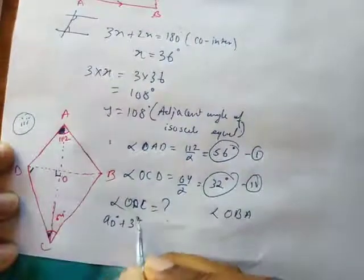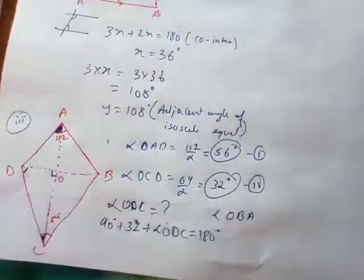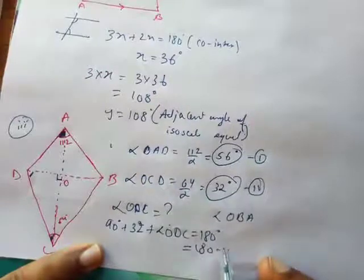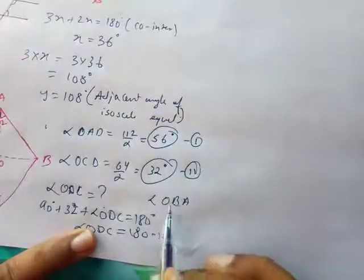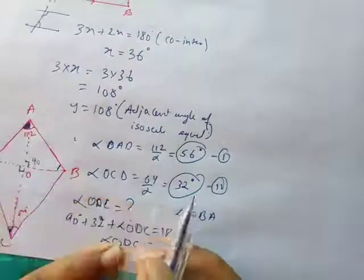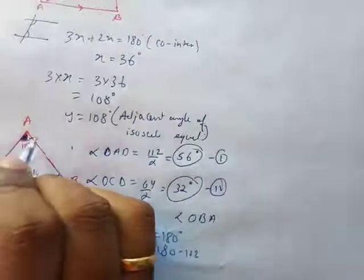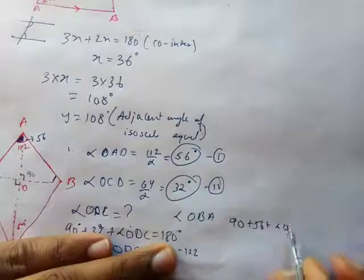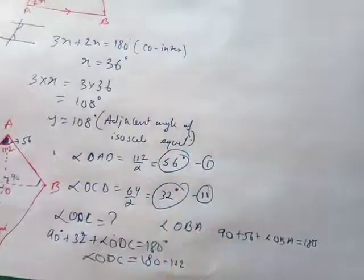So 90 + 32 = 122, and 180 − 122 gives angle ODC. For angle OBA: the diagonal bisects at 90°, and we already know the other angle is 56°. So 90 + 56 + angle OBA = 180° by the angle sum of a triangle, and you can solve for OBA. I'll help you understand the method and you can solve it further.